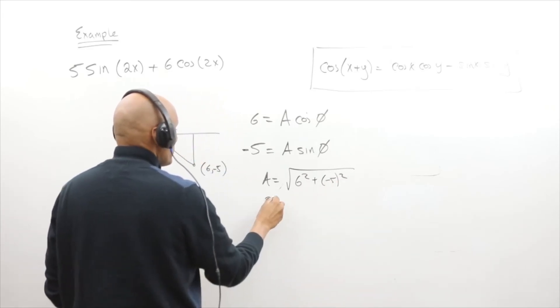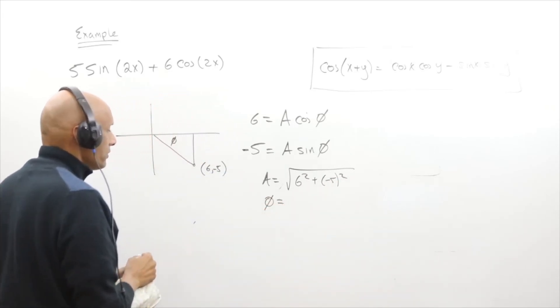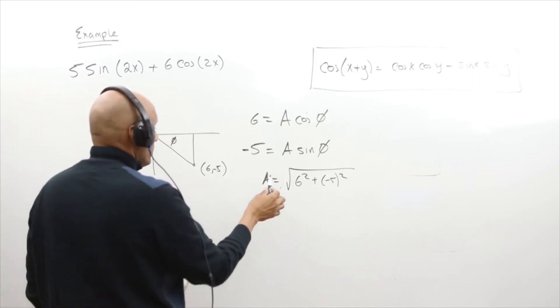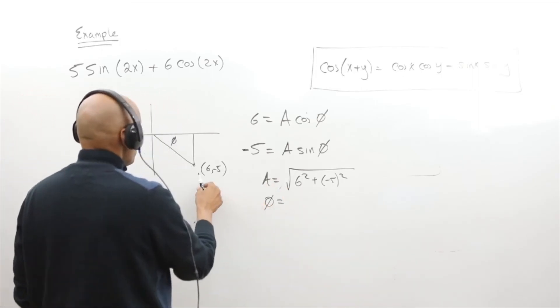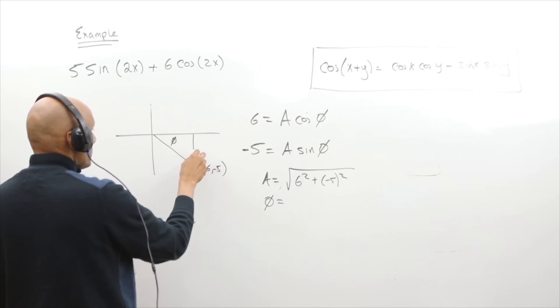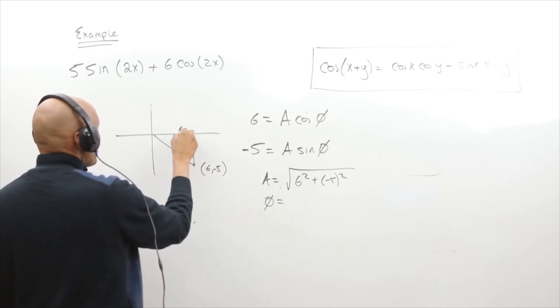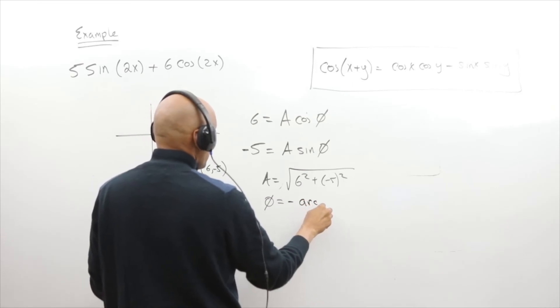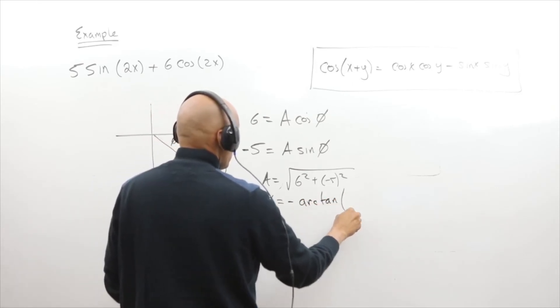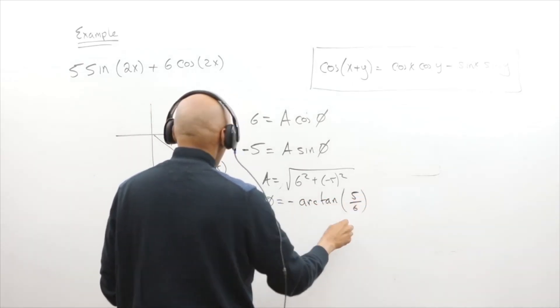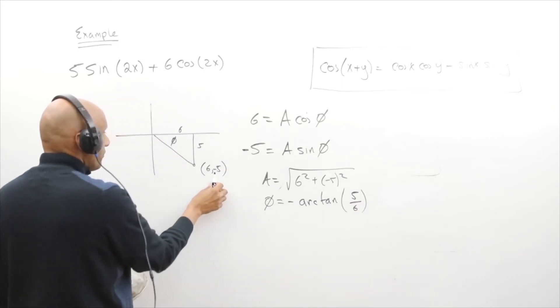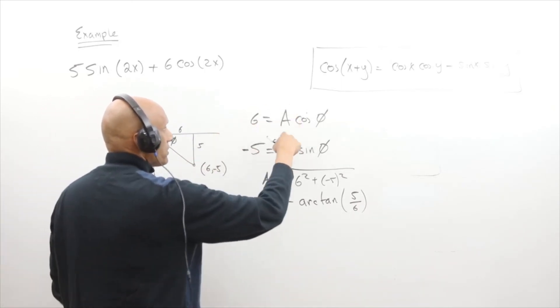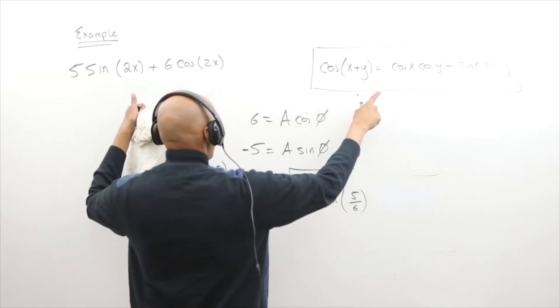The phase angle is going to be equal to, notice we have a point 6 and 5, so this is really negative of the arc tangent of 5 over 6. Be careful, the 5 and 6 have been swapped because I want to force this to look somehow like this equation right here.